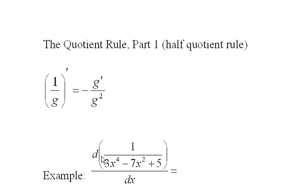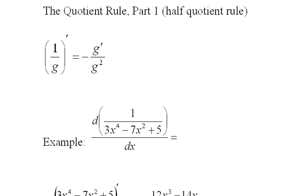So I guess what I'd want to do is put a negative in front, square the bottom, and then take this polynomial and put the derivative of that polynomial on top, and that's just what I do.